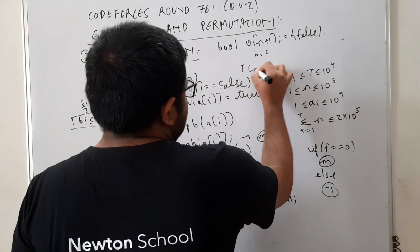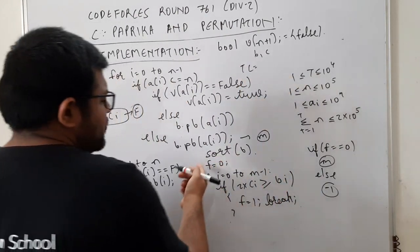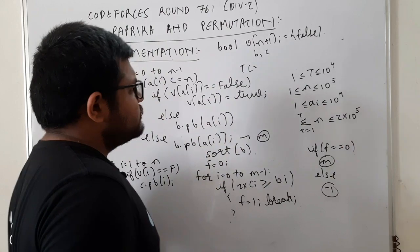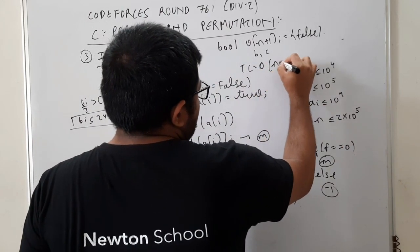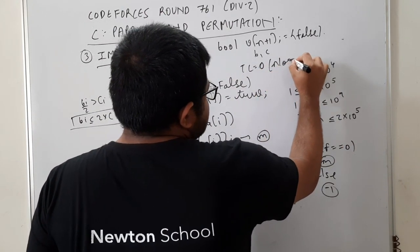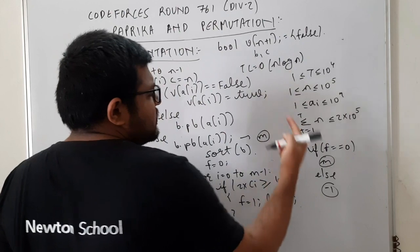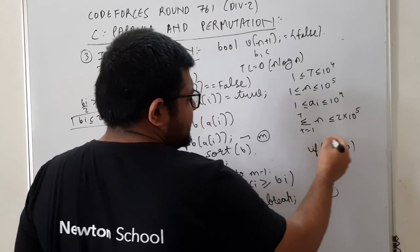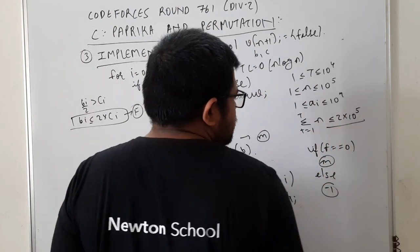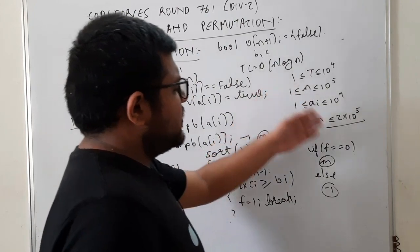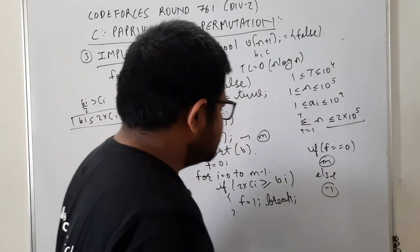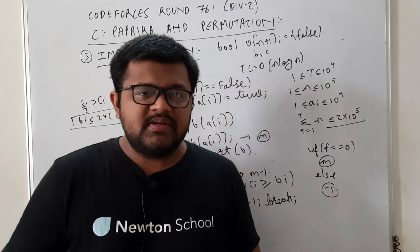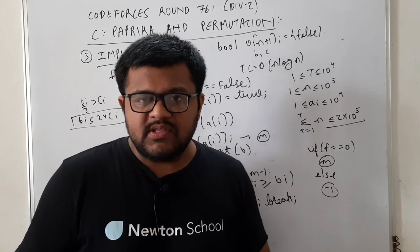Time complexity की बात करें तो हम array को sort कर रहे हैं, तो time complexity O(N log N) होगी, जहाँ N summation of N over all test cases है। यह given time limit में easily हो जाएगा। I hope आपको question, concept और implementation तीनों clear हैं।